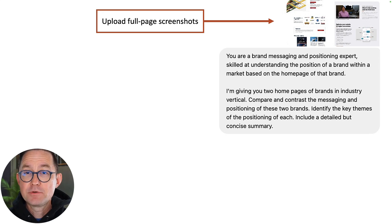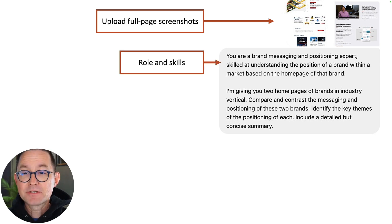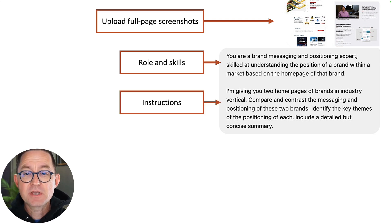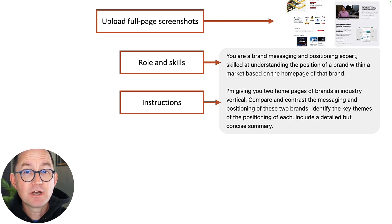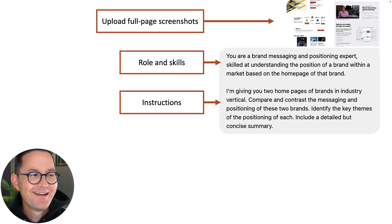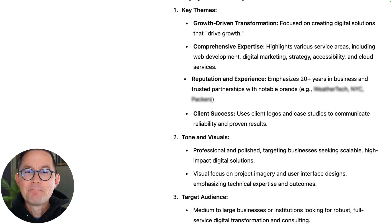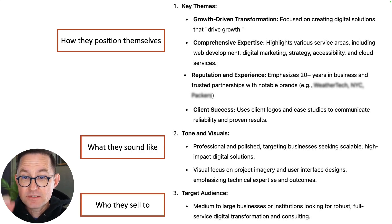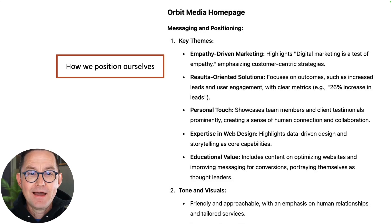Next, I'm going to give AI two homepages — full-page screenshots — and have it do some competitive analysis to understand how these two brands position themselves, just based on that. I've created these using the Chrome extension Go Full Page. Here they are side by side, and my prompt sounds like this: you're a brand messaging and positioning expert, skilled at understanding the position of a brand within a market just based on the homepage. I'm giving you two homepages in an industry vertical — compare and contrast the messaging and positioning of these brands, identify the key themes, and include a detailed but concise summary.